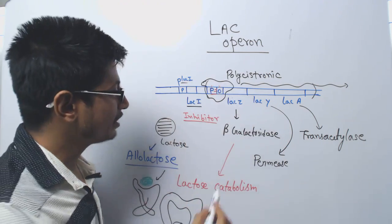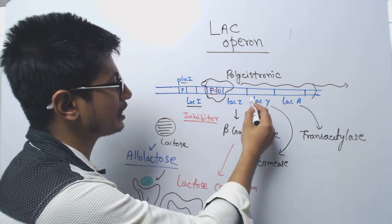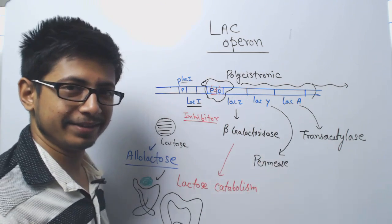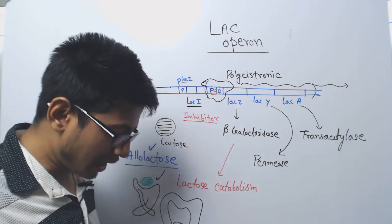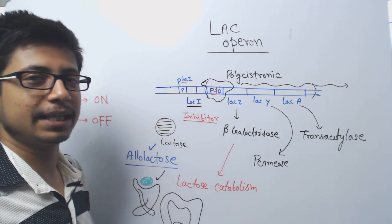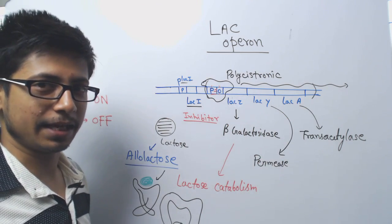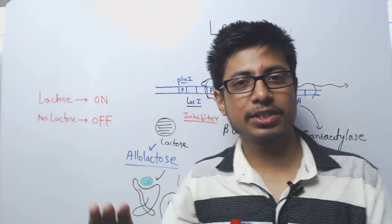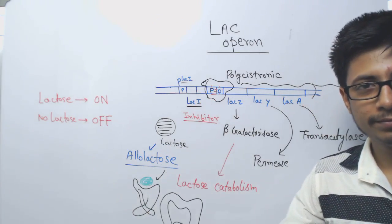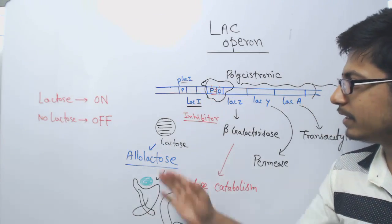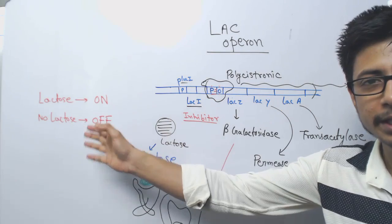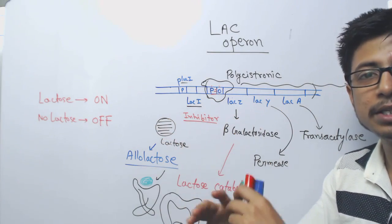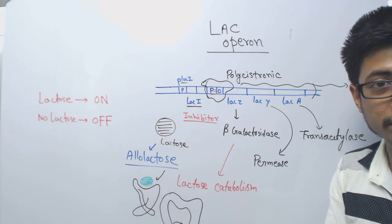The operon is turned on, structural genes are transcribed, and proteins will be made. Now we can utilize the lactose inside the cell. By default it is turned off, but when there is lactose, allolactose binds with the repressor — the inhibitor — and changes its structure, so it no longer can bind to the promoter.